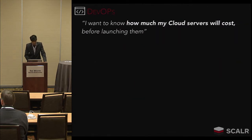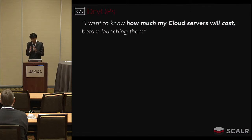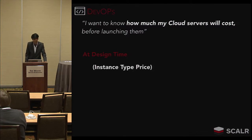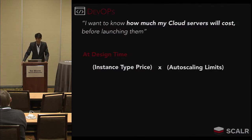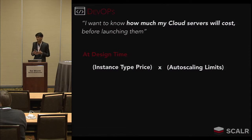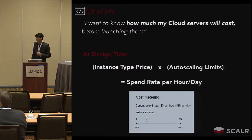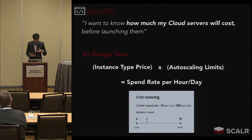Let's start with DevOps. Before launching any cloud servers, they need to understand how much they're going to cost. At design time, DevOps needs to know the instance-type price for the servers they're launching. They can then multiply this by the auto-scaling limits they're applying — for example, maybe only two MySQL servers are needed, scaling up to five based on traffic. Instance-type price multiplied by instance count gives a spend rate per hour or per day. In the screenshot here, we expose that value to developers when they're architecting their farms — spend per hour, spend per day, and the actual instance count.